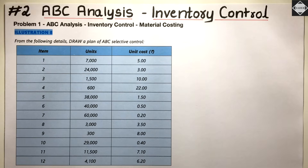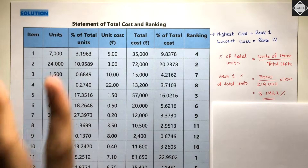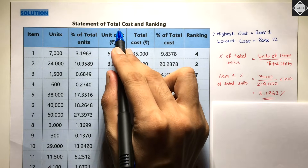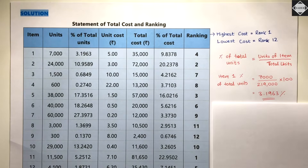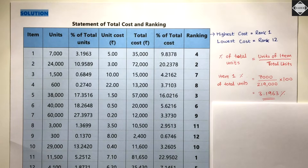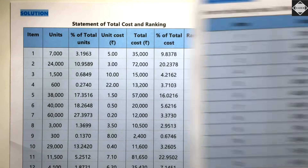Now let's go to the solution. It is really simple and straightforward. The first step is to gather all data, calculate the total cost, and then do the ranking.